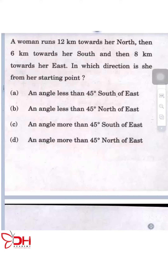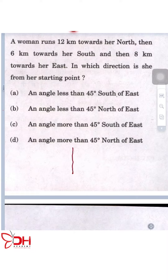Welcome back. A woman runs 12 kilometers towards north and then 6 kilometers towards south. This is her starting point. She goes 12 kilometers north, then comes back 6 kilometers south, so she's at a net 6 kilometers north of her starting point. Then she goes 8 kilometers towards east.